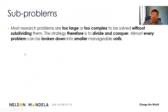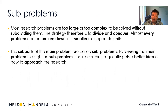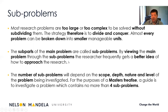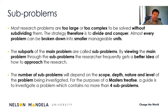Each problem can then be divided into smaller sub-problems, because the problem statement is probably much too complex. Sub-parts of the main problem are called sub-problems, and by viewing the problem through them, researchers can frequently get a better idea of how to approach the research. In terms of the number of sub-problems — a question I normally get — it depends on the scope, depth, and nature and level of the research. Normally at master's level, four sub-problems or sub-questions is enough. My philosophy is: go in-depth into fewer sub-problems rather than skimming over many.